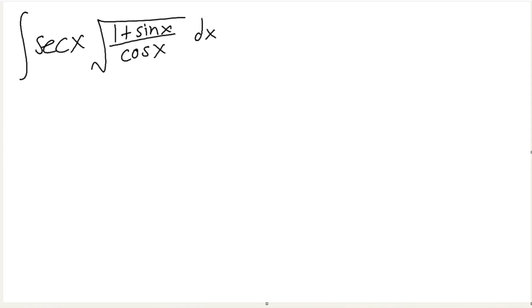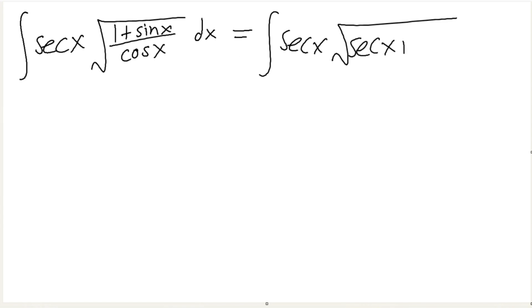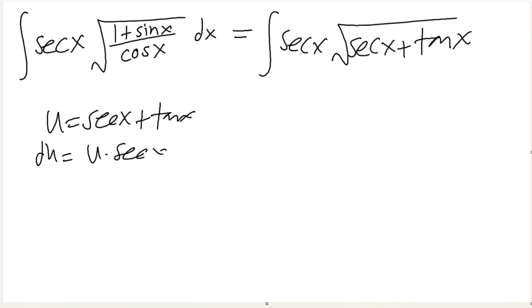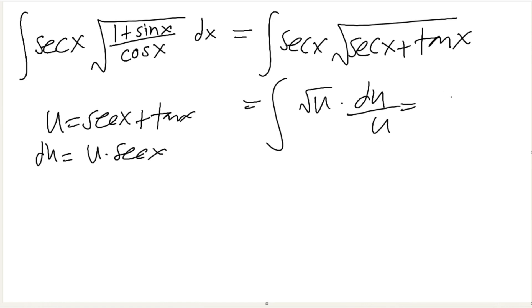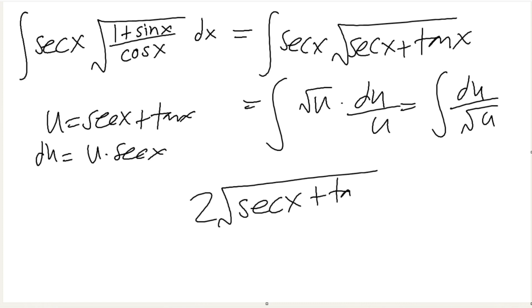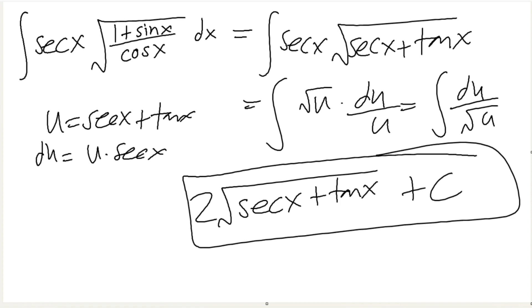What do we do here? This is secretly secant x. If we split it in terms, this is just secretly secant x plus tangent x. So now it's the same thing: let u equal secant x plus tangent x, and du equals u times secant x. So this is just square root of u, du over u because of this secant x. Another easy integral — this is just square root of secant x plus tangent x plus c. And there you go.